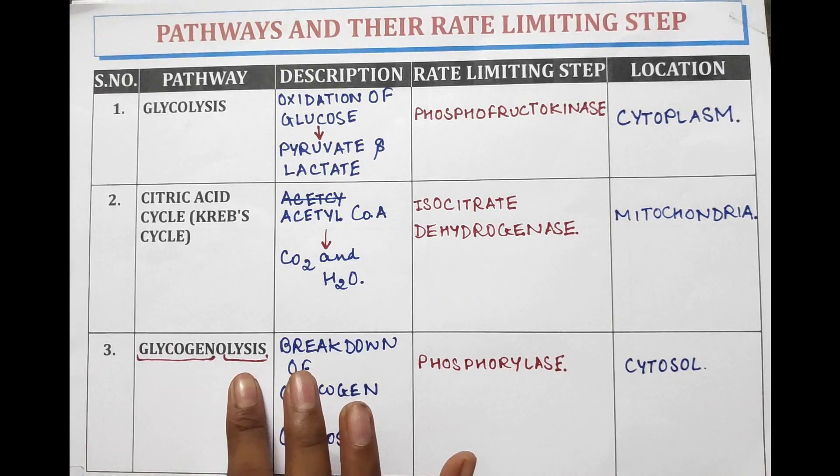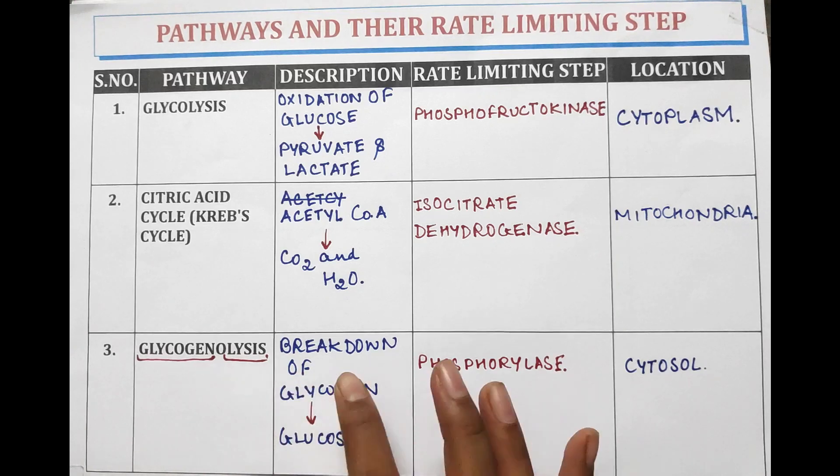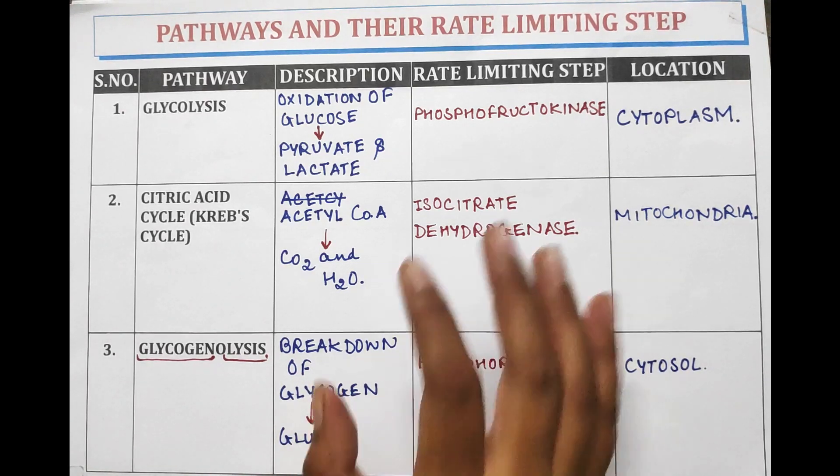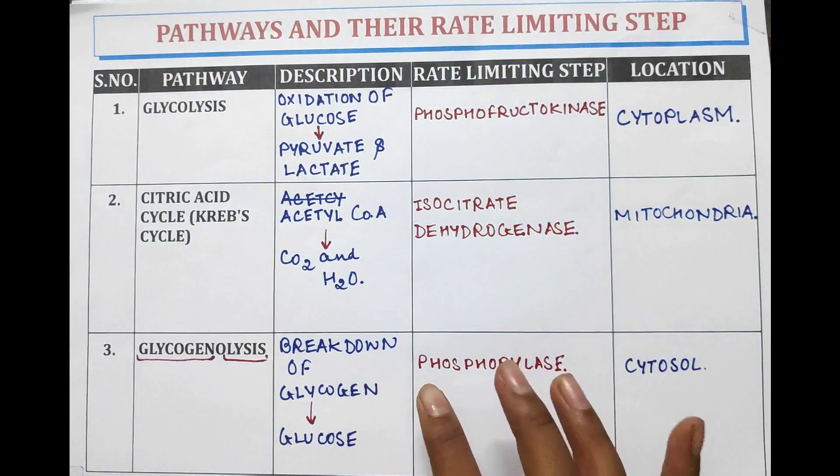Glycogenolysis means breakdown of glycogen into glucose. The rate limiting step in glycogenolysis is phosphorylase.